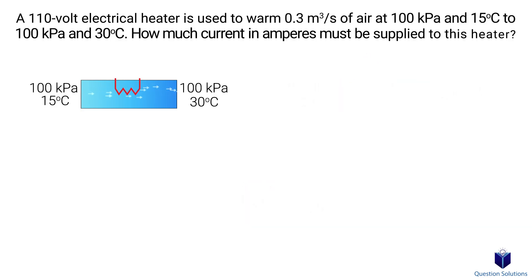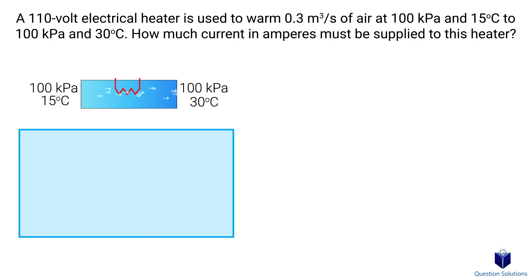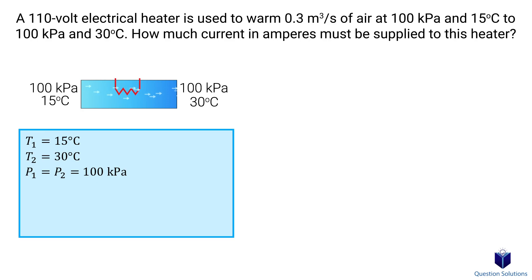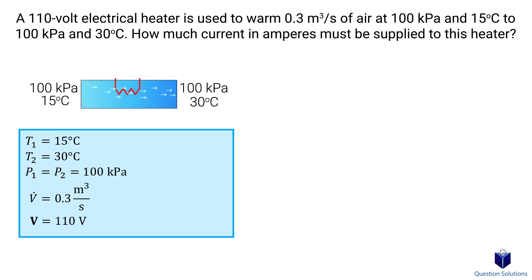Let's take a look at this problem where we have an electrical heater that's used to heat up air. We need to figure out the current supplied to the heater. The initial temperature of the air is 15°C and it's heated to 30°C. The initial and final pressure stay the same at 100 kPa, and the volume flow rate of the air is 0.3 cubic meters per second. Lastly, the voltage of the heater is 110 volts.